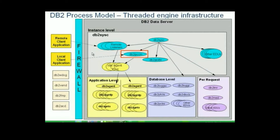Depending on what you are doing on the database, other threads may be spawned. For example, at the application level there is a DB2 agent which is a coordinator agent for other workers, and that agent may spawn other agents known as sub-agents. This could happen if, for example, you enable intra-parallelism by turning on the parameter intraparallel in the DBM CFG, which would spawn other agents to divide the work.